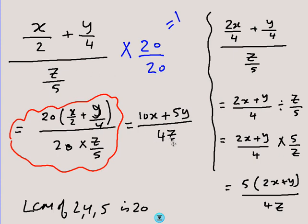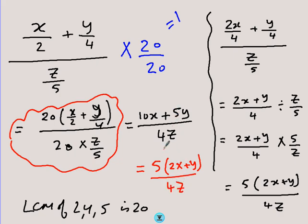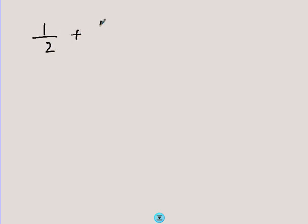You may want to put the result in the same format as before: factorizing the numerator, there is a common factor of 5, giving 5(2x + y) / (4z). These two are equivalent formats. This method is not only useful in algebra — it's also very useful with numbers. For example, consider (1/2 + 1/3) / (2/5 + 5/6).